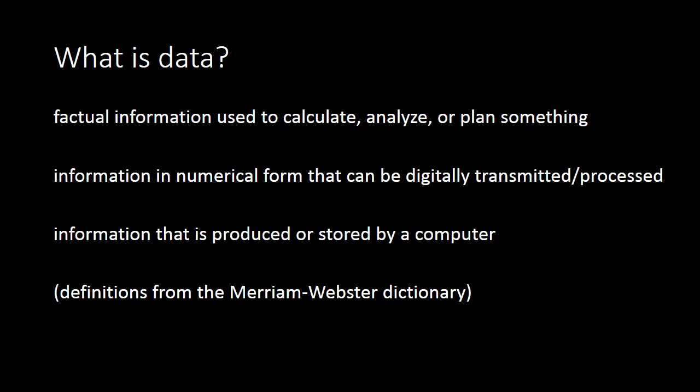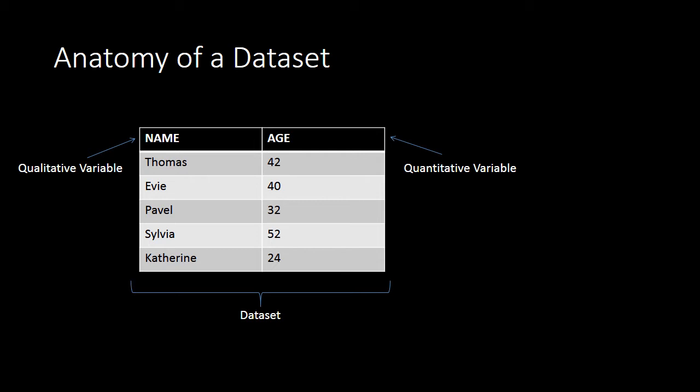We'll be focusing a lot on quantitative data analysis and the analysis of numerical data. When you're analyzing social science data, you're typically looking at a data set. A data set is a construction of rows and columns that captures a set of observations. For example, we might capture two pieces of information about different people — their name and their age. Name is a qualitative, nominal variable, while age is a quantitative, ratio-level variable with a fixed zero point.